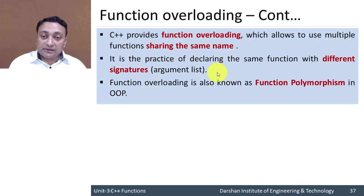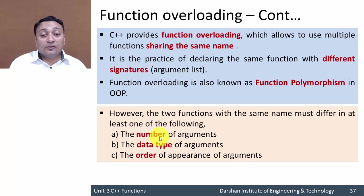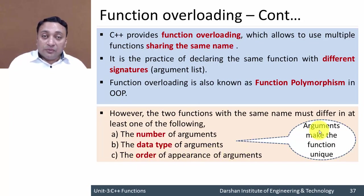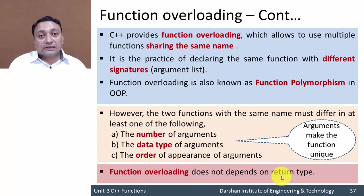There are three ways to provide different signatures. First, you can provide a different number of arguments — in the previous example, the three sum functions had two, three, and four arguments. Second, you can provide different data types of arguments. Third, you can use a different order of arguments. The most important thing is that function overloading does not depend on return type. If two functions named 'sum' have the same signature but different return types (int vs float), it will not be allowed in C++.